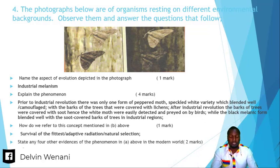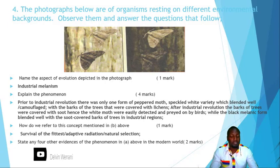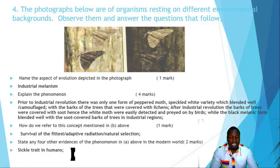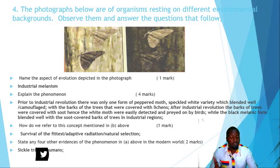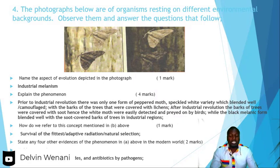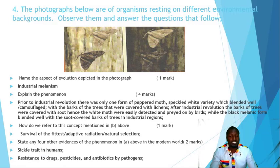State any four other evidences of this phenomenon in the modern world. Number one is sickle cell traits in humans. Number two is resistance to drugs, pesticides, and antibiotics by pathogens.